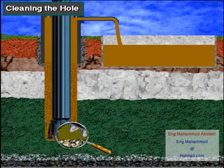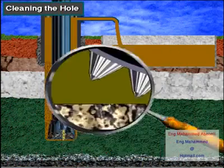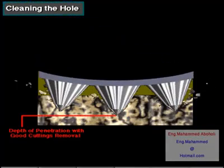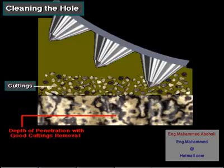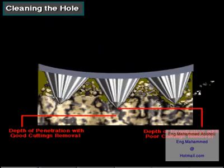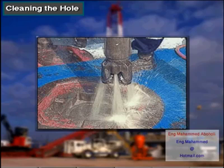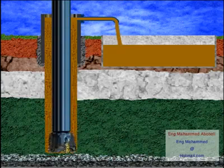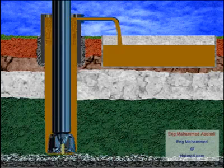One function of mud is to clean the hole. A clean hole allows the bit to drill into uncut formation rock. Mud jets out of the bit and moves cuttings away from the bottom of the hole. The mud then carries the cuttings up the annulus and to the surface for disposal.